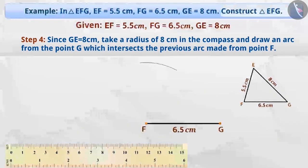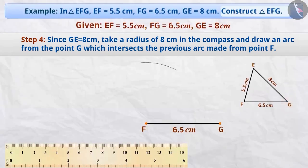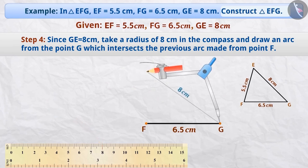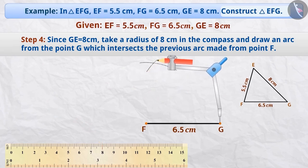Step 4: We know that point G is at a distance of 8 cm from point E. Therefore, with the help of a compass, we will measure a radius of 8 cm and draw an arc from point G.